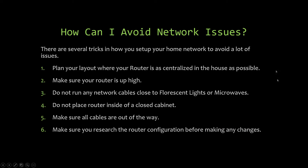There are several tricks for setting up your home network to avoid issues. First, plan your layout so your router is as centralized in the house as possible and placed up high — the higher, the better signal you'll get to all devices. Do not run network cables close to fluorescent lights or microwaves, as they cause a lot of interference and generate network chatter by propagating a positive charge into your cables. Do not place a router inside a closet or cabinet.